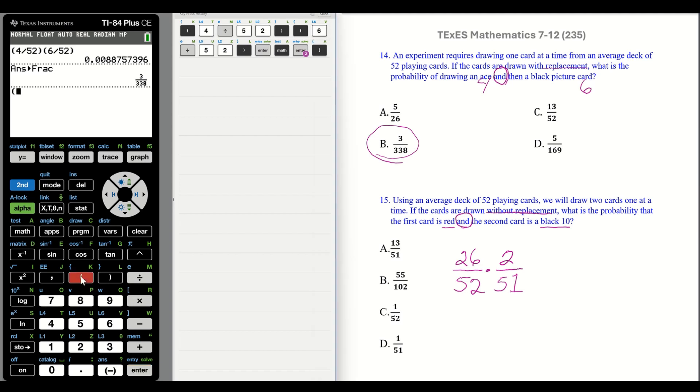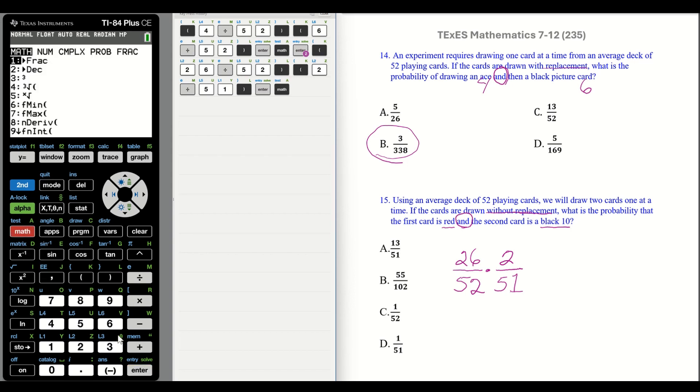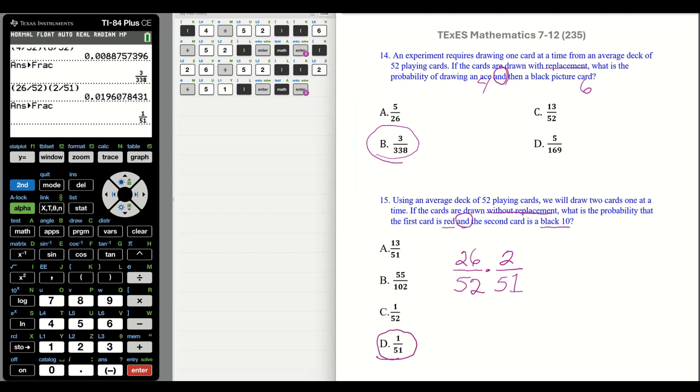Let's put that on our calculator. Parentheses. 26 divided by 52. Close parentheses. Open more parentheses. 2 divided by 51. Parentheses. Enter. Okay. We need a fraction. Math. Enter. Enter. Oh, 1 out of 51. Make note of this guy right here. That's wrong. That's kind of a distraction. And this one right here, you might be tempted to choose that one. Okay. So let's go to the next one.